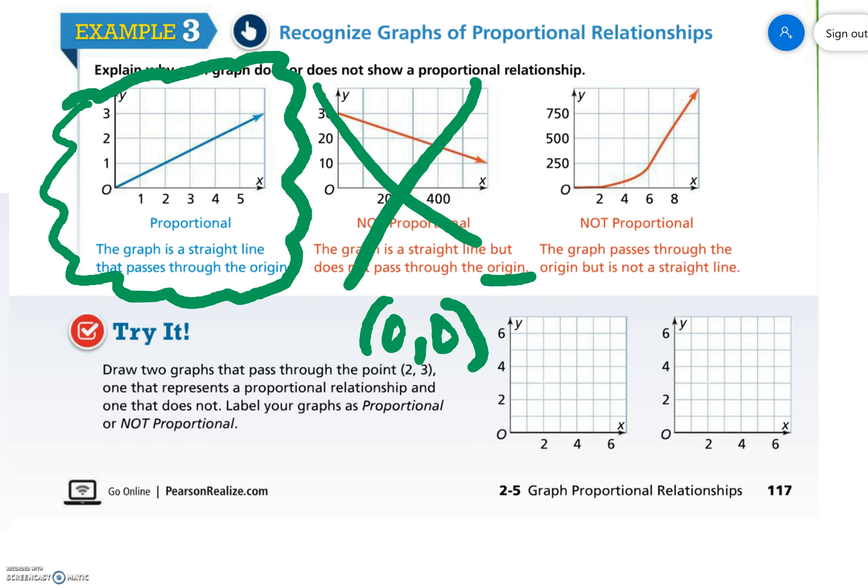The third one is not proportional. It does go through the origin, but it is not straight.